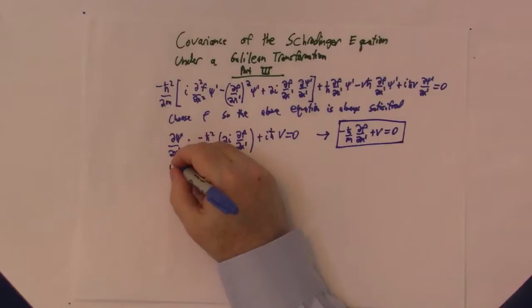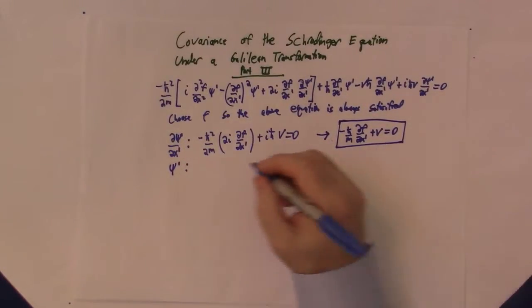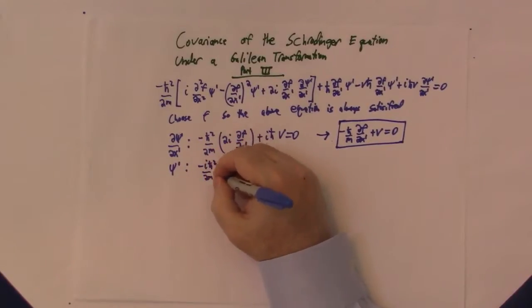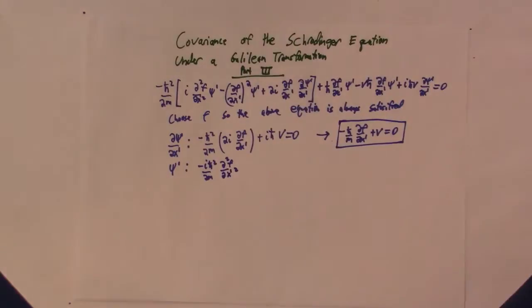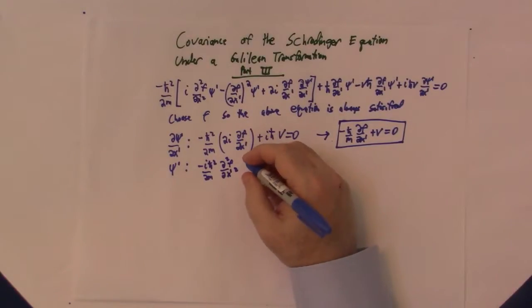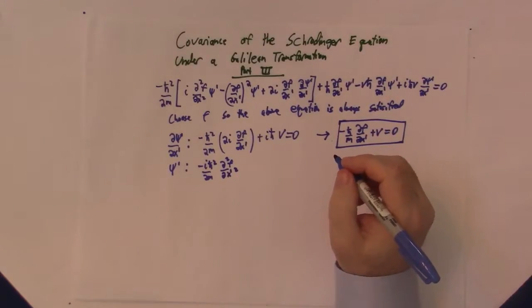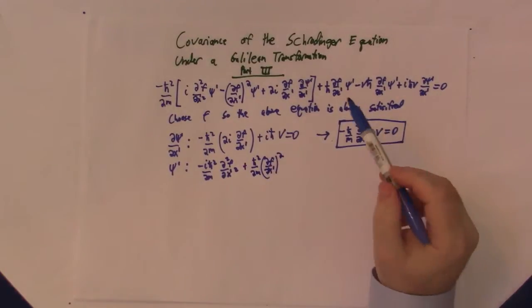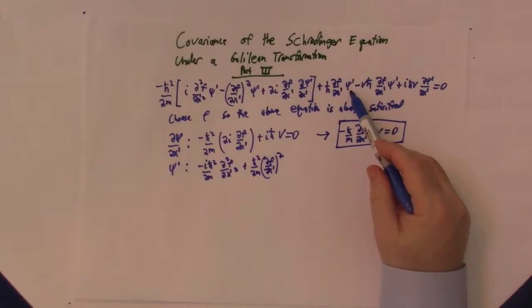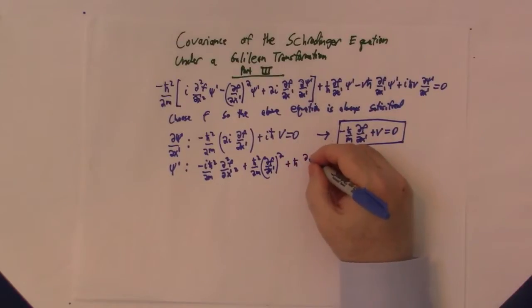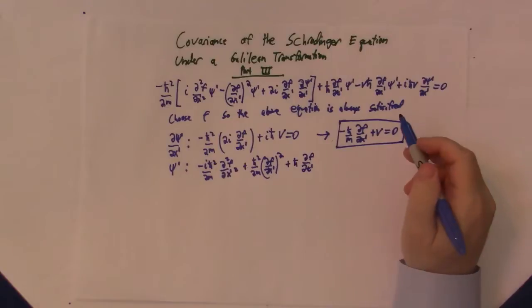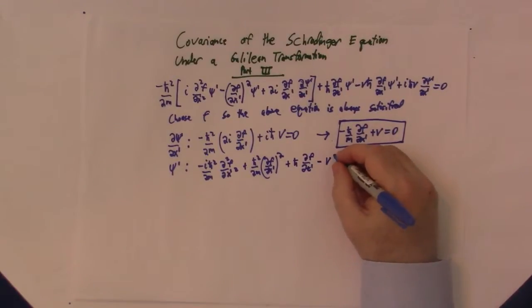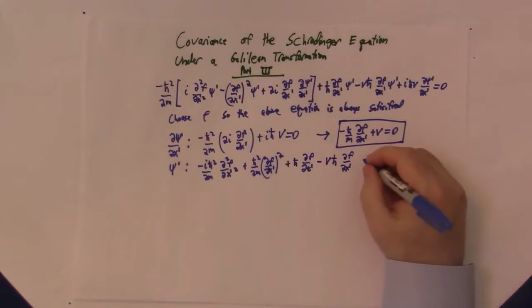And then if we take the coefficient of psi prime, we get minus i h bar squared over 2m, second partial of f with respect to x prime. I'm always working in the prime coordinate system. I might leave them out by mistake, but all of our things should be primed. And then we have plus h bar squared over 2m times the partial of f with respect to x prime squared, plus h bar times the partial of f with respect to t prime, and then minus v h bar times the partial of f with respect to x prime equals zero.